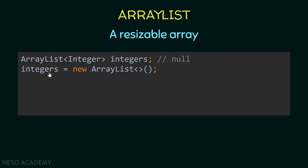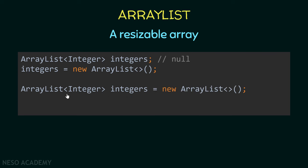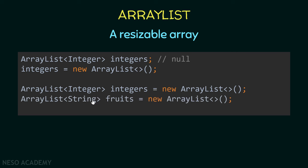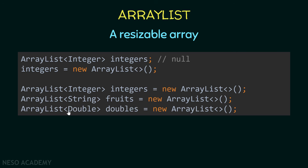Notice that when we instantiate this object we don't re-specify the type — it is enough to specify the type when we declare the object. We can do this in one statement. For an ArrayList of strings we call it 'fruits', and for an ArrayList of doubles we use the wrapper class Double and call it 'doubles', then instantiate it.